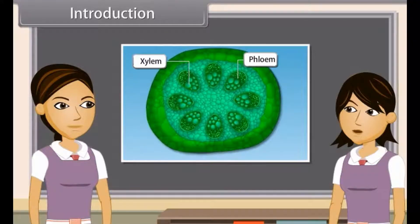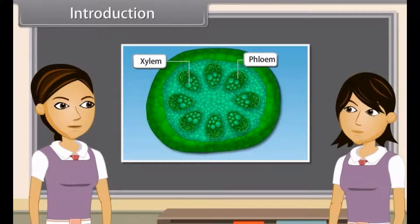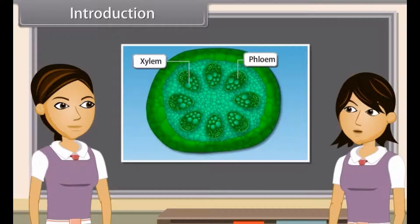It is said that in multicellular organisms, there is division of labor. Division of labor means that a particular function is carried out by a group of cells at a definite place in the body. This group of cells is called tissue, which are arranged and designed to provide efficient specialized function. So we can define tissues as a group of cells similar in nature that work together to perform a particular function. For example, nerve tissue.